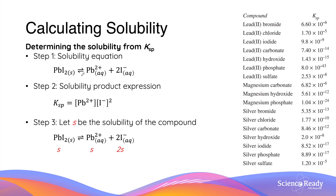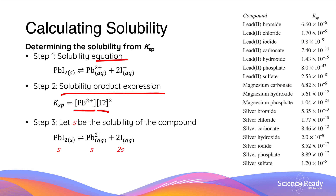The steps taken to calculate solubility are generally the same for every ionic compound. Firstly, write a balanced chemical equation and solubility product expression to represent the dissolution of the compound. We'll use the dissolution of lead iodide as our example again. The ratio between lead iodide and lead ions to iodide ions is 1 to 1 and 1 to 2 respectively. As a result, the Ksp value will be the concentration of lead multiplied by the concentration of iodide squared, and of course both concentrations must be in moles per liter.